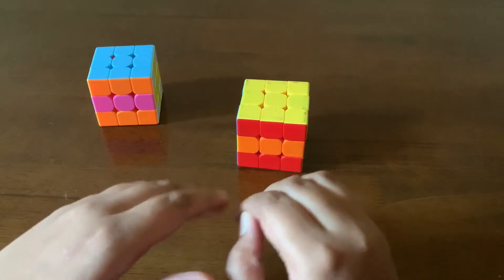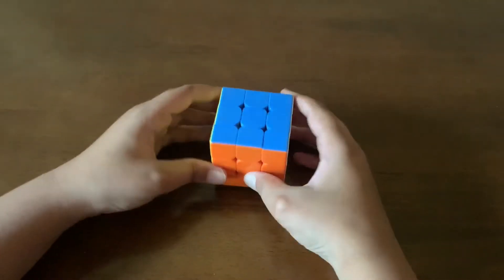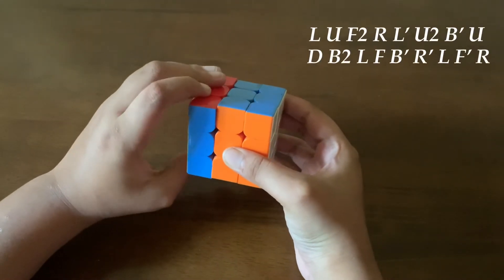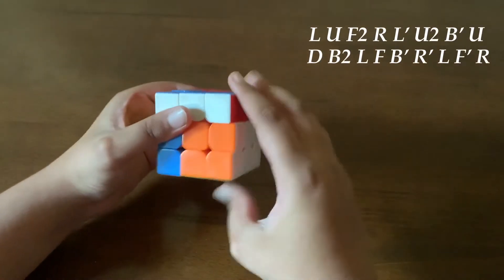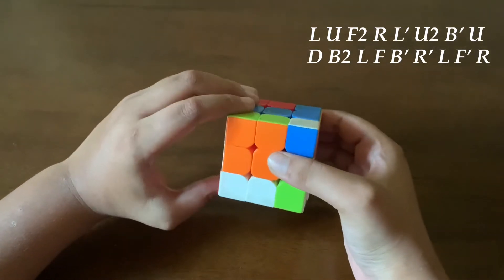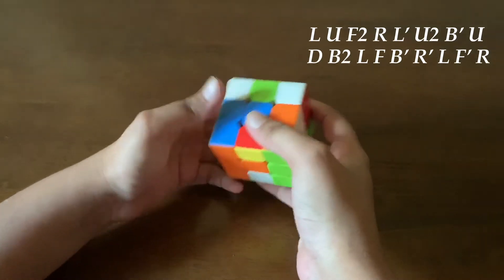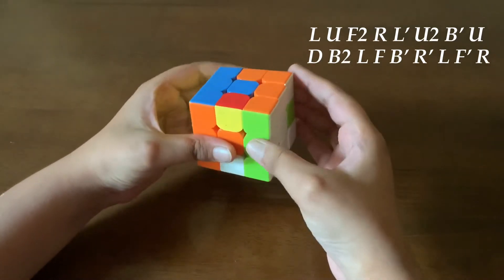So this is the algorithm for the cage pattern, which is L, U, F2, R, L dash, U2, B dash, U,